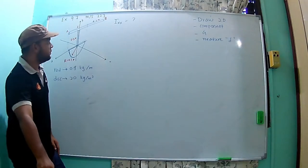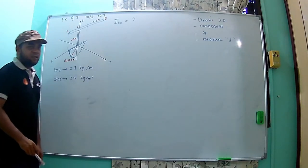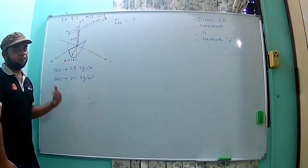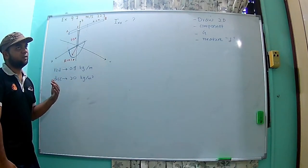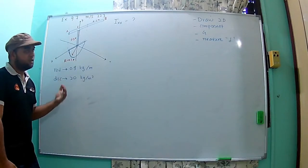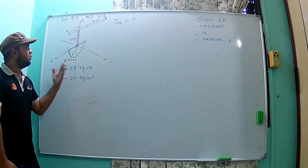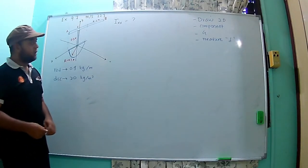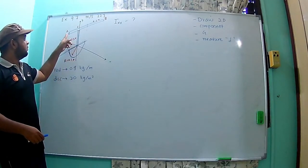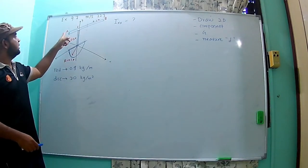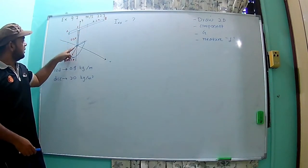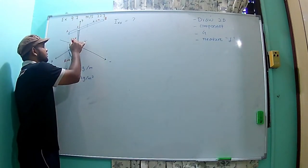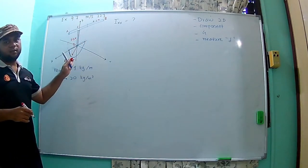The first thing is to separate and identify the simple components. You have to make sure that you know how many simple components you have in this composite component. You can identify and use three components: A, B, C, D, and this one.